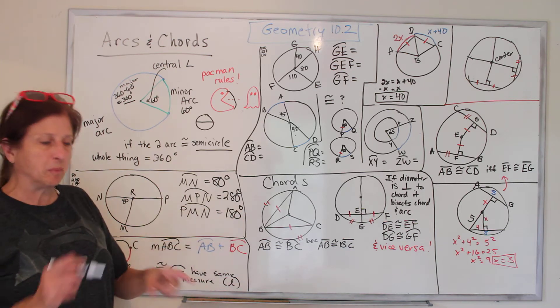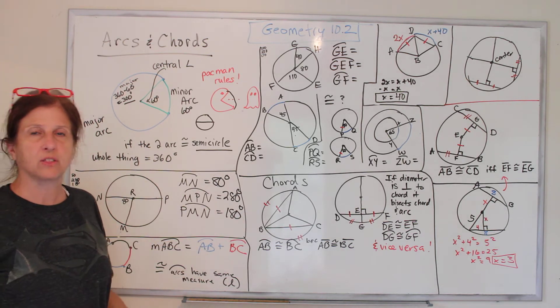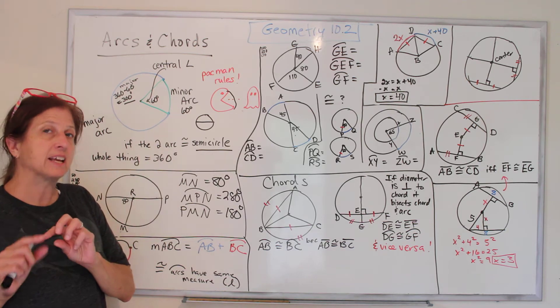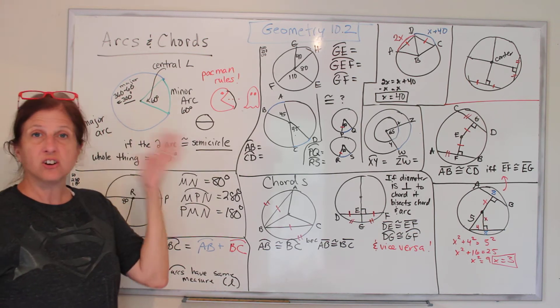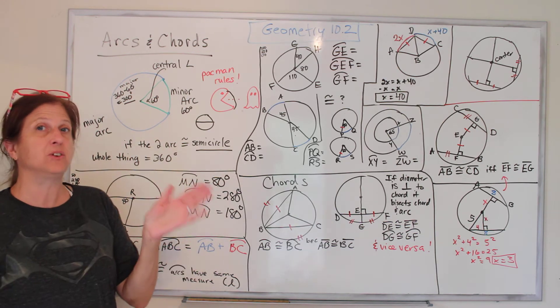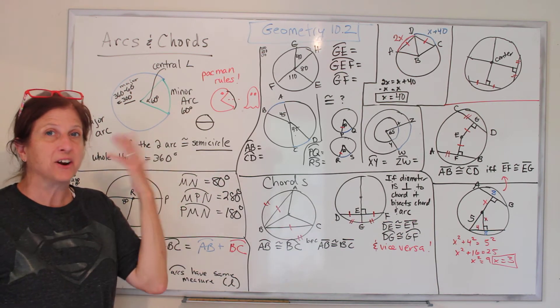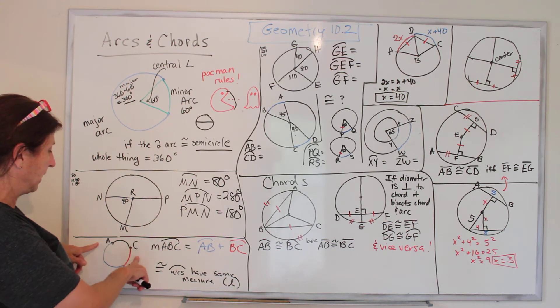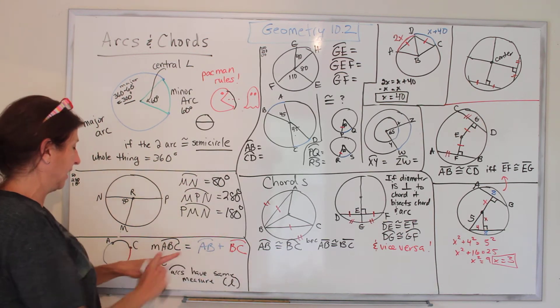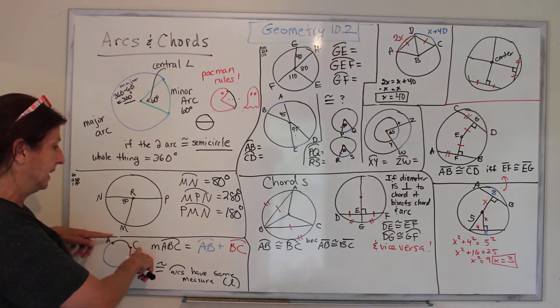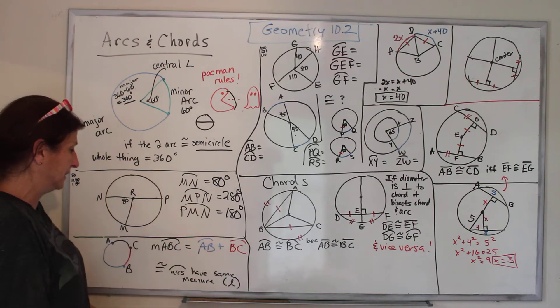Here we have a rule. Remember when we learned that if you have two line segments and they're next to each other, you're allowed to add them up. Well, if you have two arcs and they're next to each other, you're allowed to add them up. So we have the blue arc and the red arc, and you're allowed to add them up.